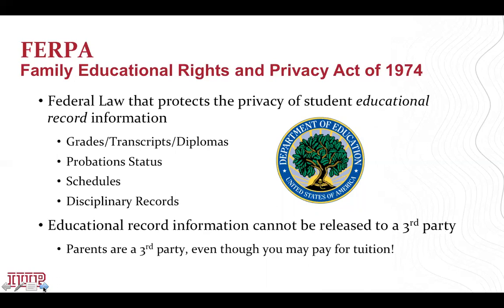For example, if a parent would call our office looking for their child who is to be in class and want to know the building and time of the class, we could not release this information according to federal law. However, don't panic. This is why I am here today to tell you about what IUP has developed to be compliant with federal law but still provide parents and family members with the information they need while empowering students as they transition to adulthood.